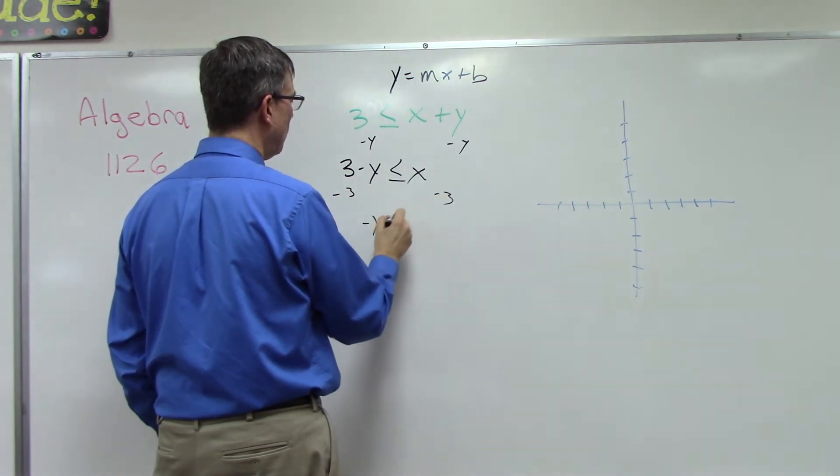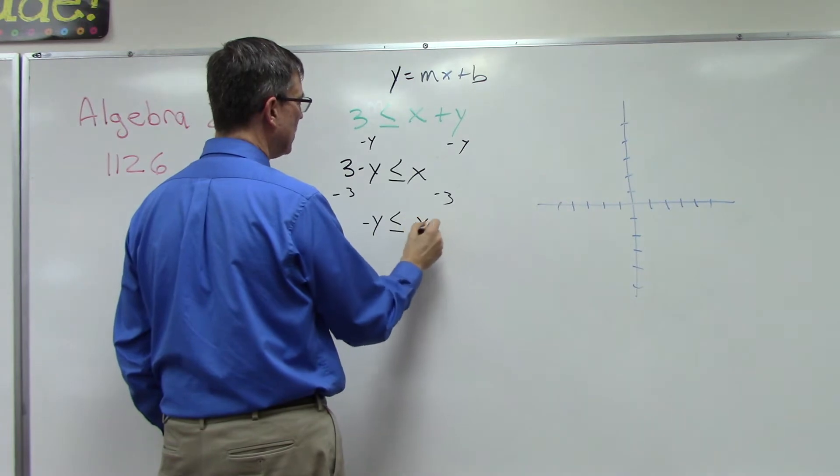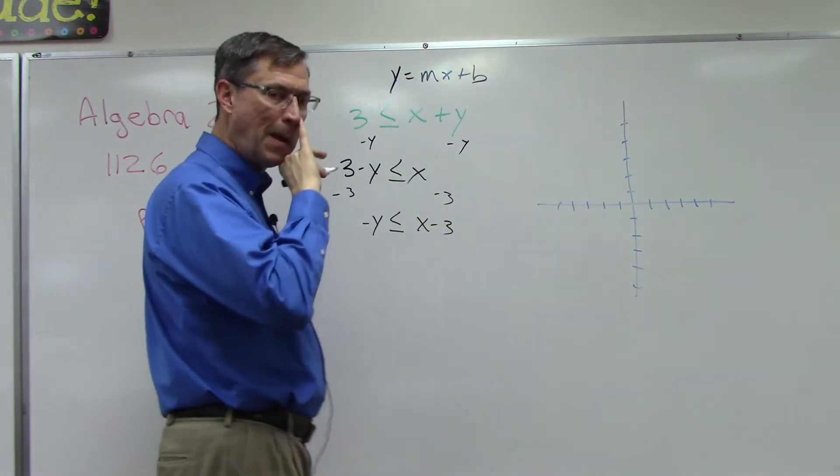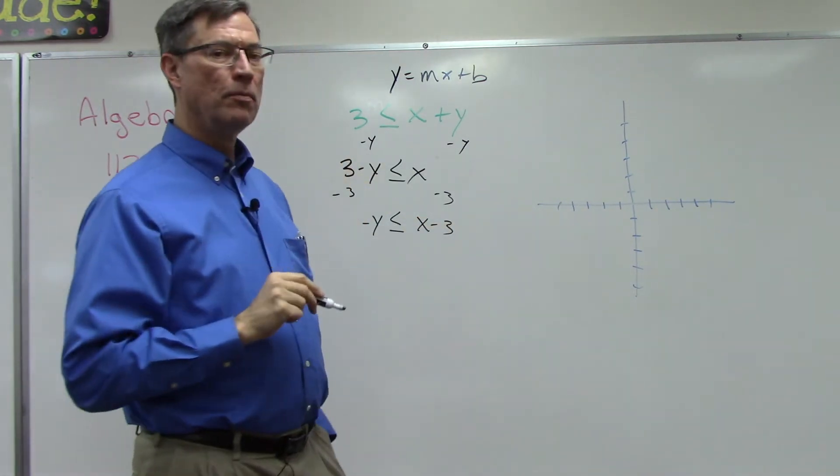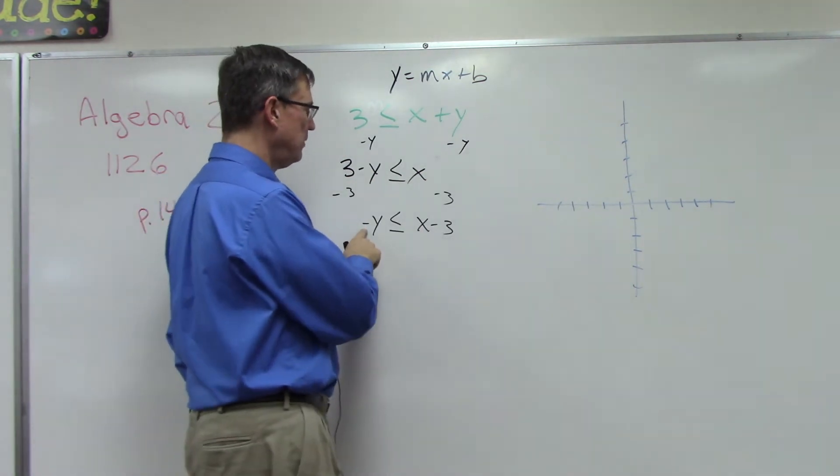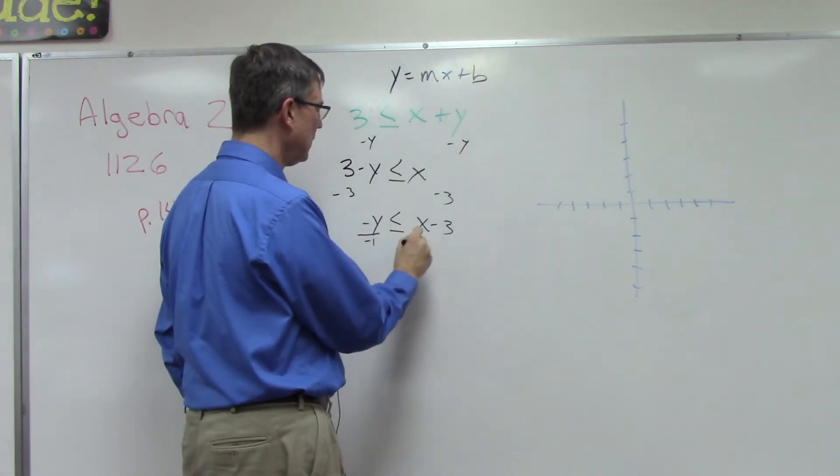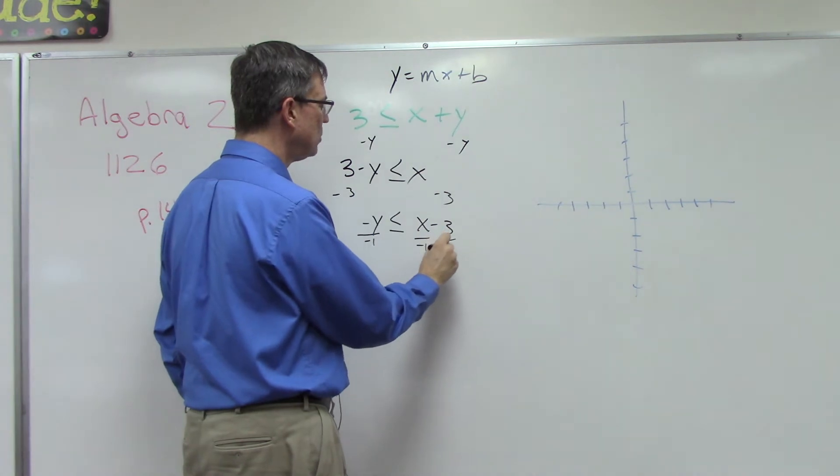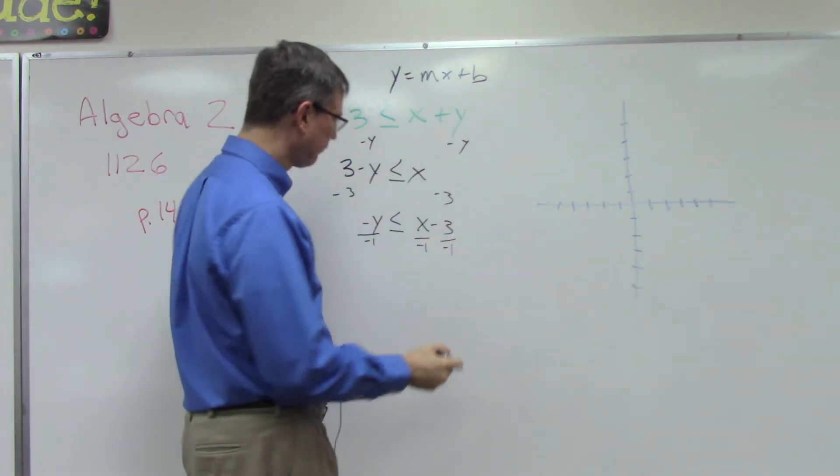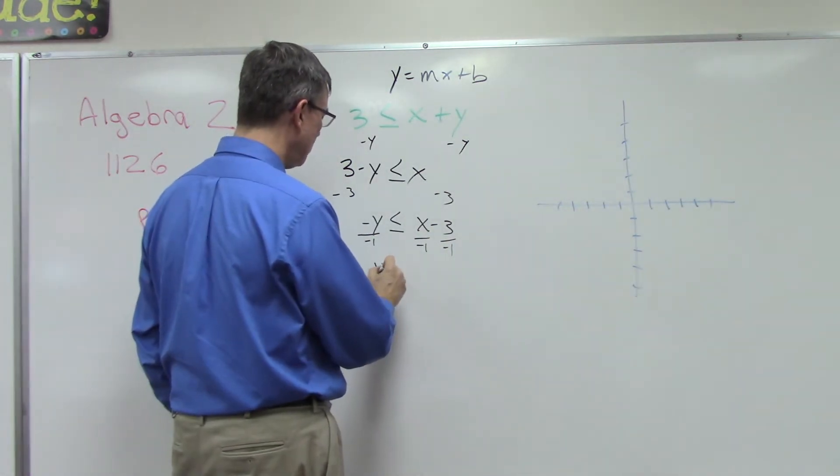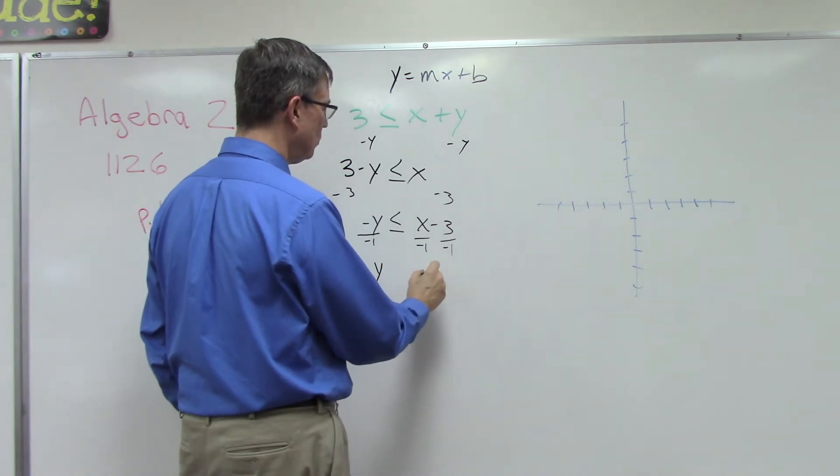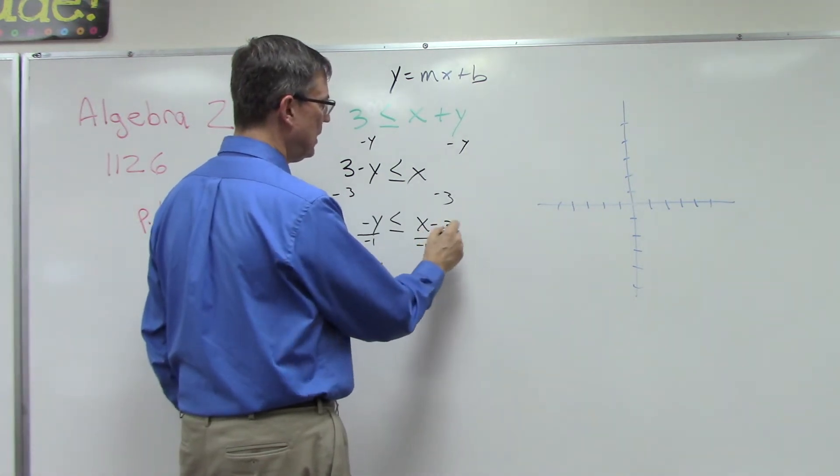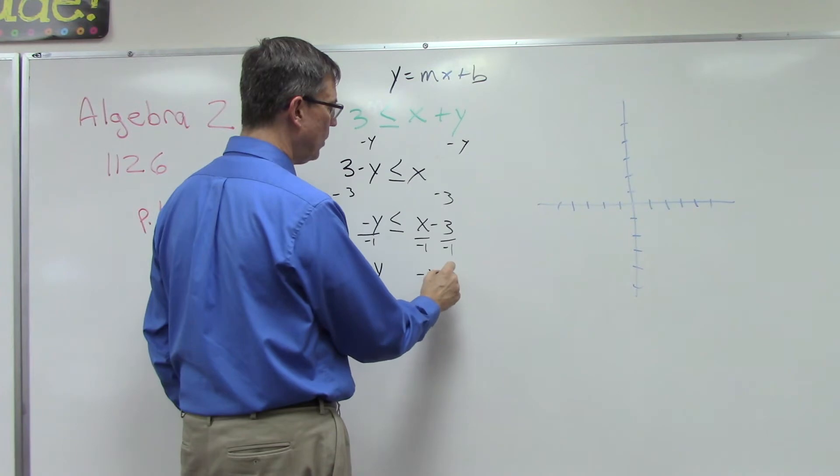So now I have negative y is less than or equal to x minus three. We're not done though—we can't have a negative y, so we need to divide by negative one. We have to do the same thing to everything. That will change this to a positive y. This will become negative x. Negative three divided by negative one is positive three.